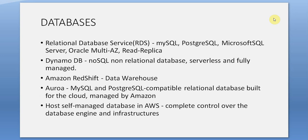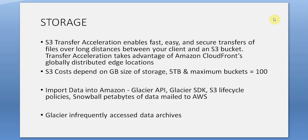Databases: RDS supports MySQL, PostgreSQL, Microsoft SQL Server, Oracle, multiple AZ, and read replicas. DynamoDB is a NoSQL, non-relational, serverless, fully managed database. Redshift is a data warehouse. Aurora is a MySQL and PostgreSQL compatible relational database built for the cloud and managed by Amazon. You can also host a self-managed database in AWS for complete control over the database engine and infrastructure.